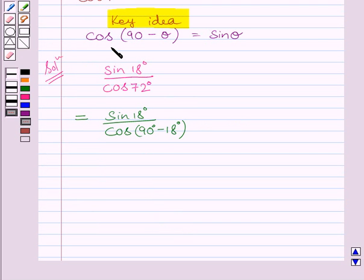Now, from the key idea we know cos 90 minus theta is equal to sin theta. Here, value of theta is 18 degrees. So, cos 90 minus 18 degrees can be written as sin 18 degrees.